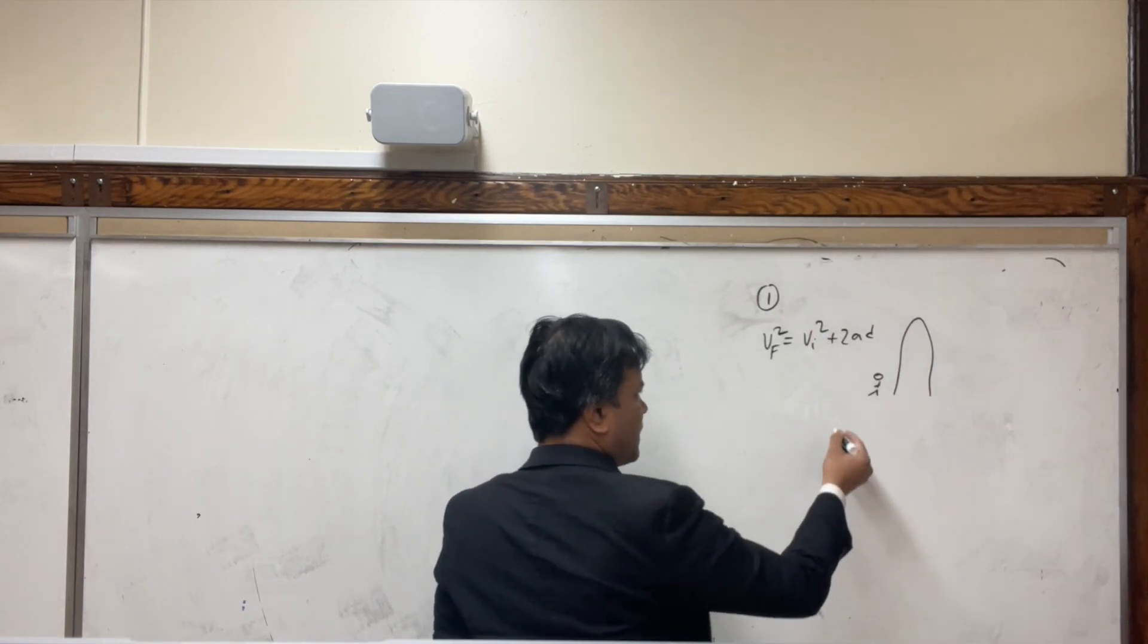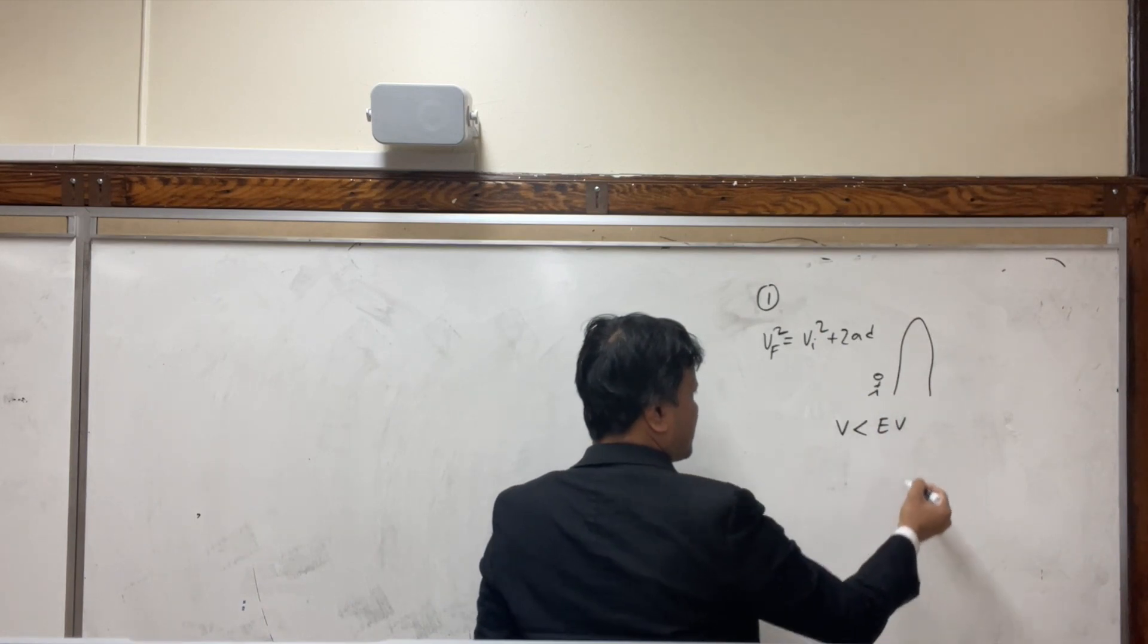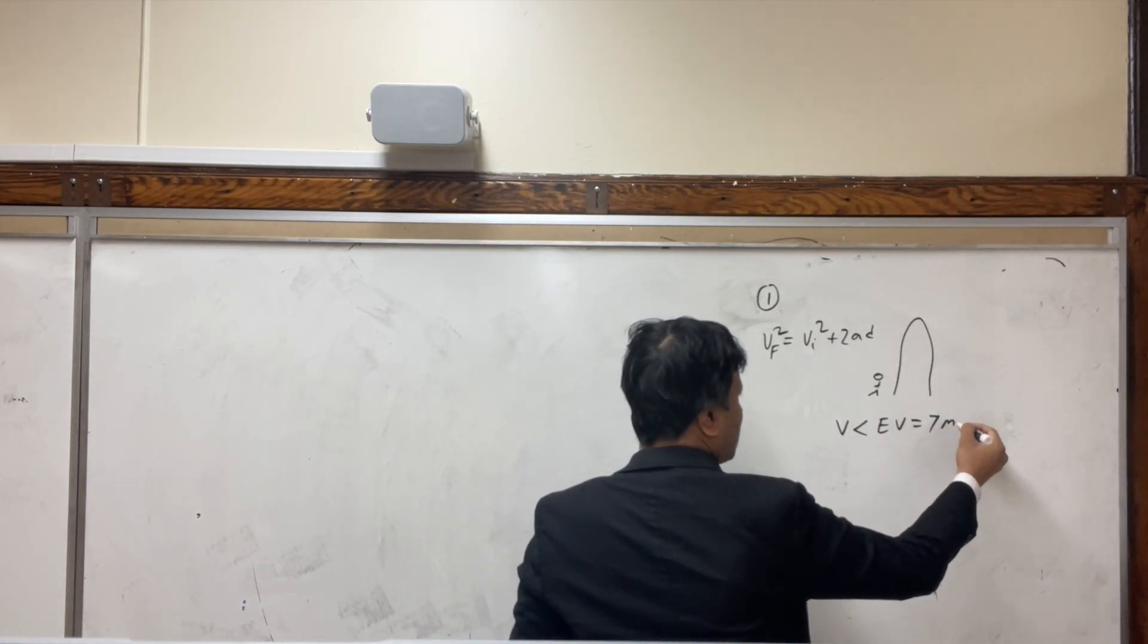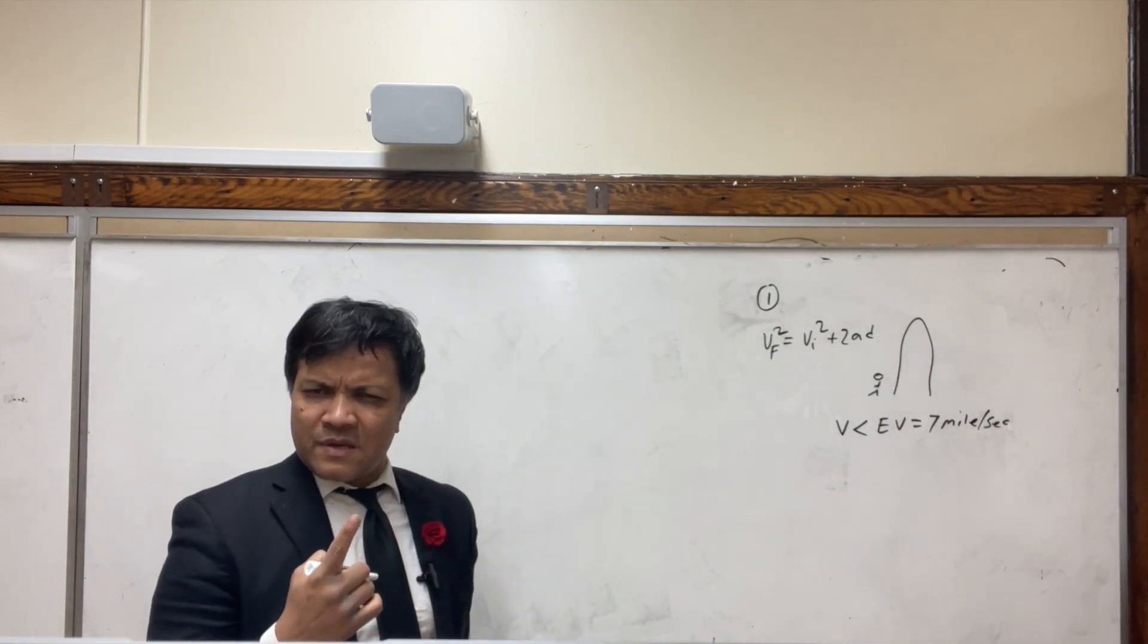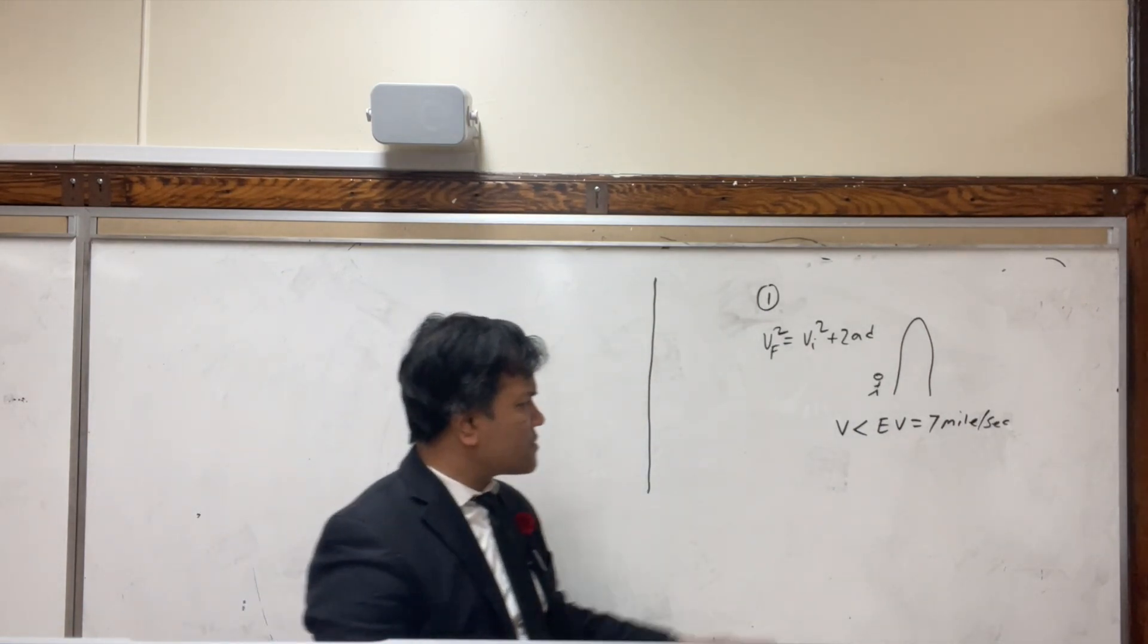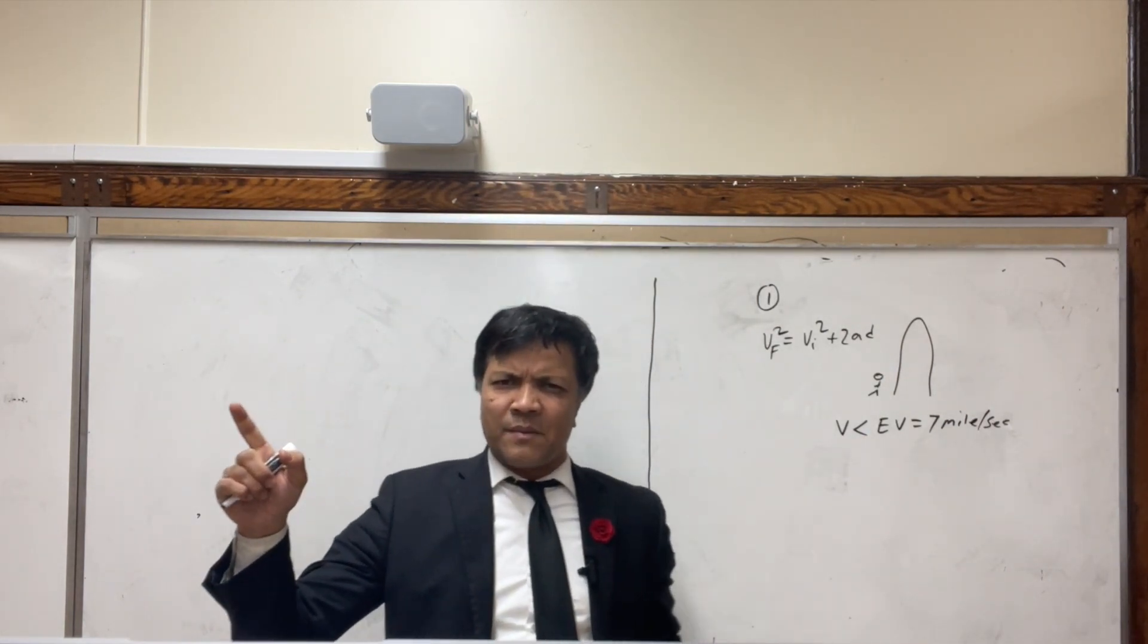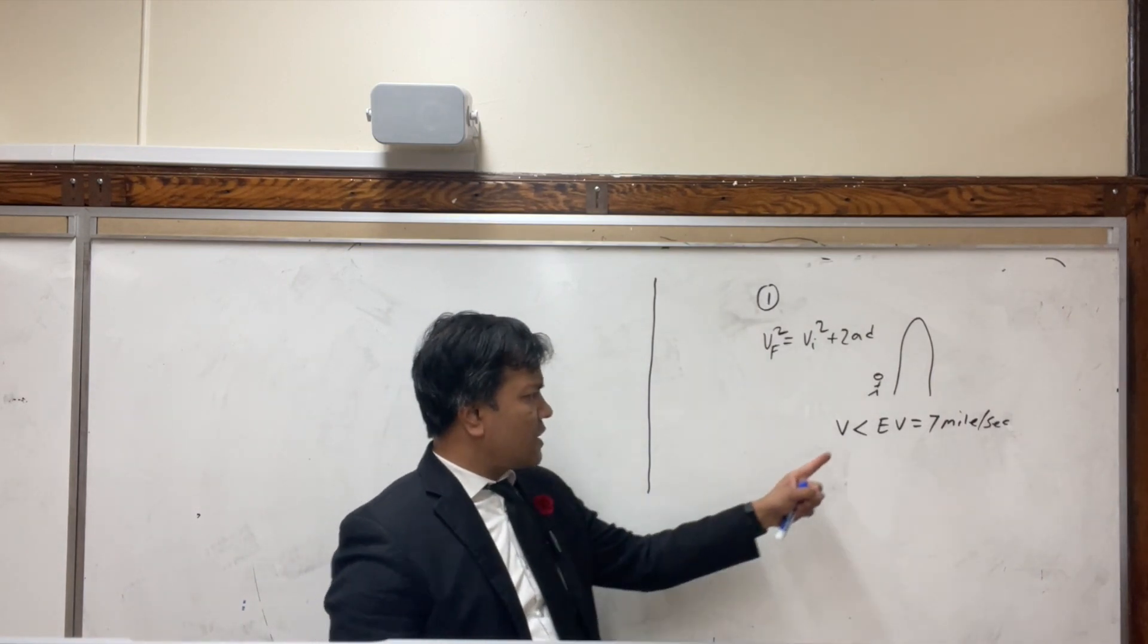What we are trying to do: when I jump, of course I'm going to come back because my velocity would be less than the escape velocity. Escape velocity is 7 miles per second. If I jump up 7 miles per second then I will not make a parabola, I'll go like this.